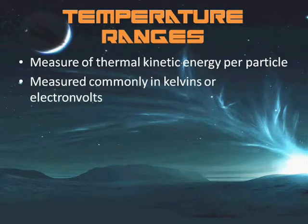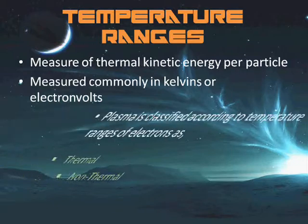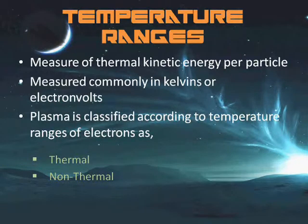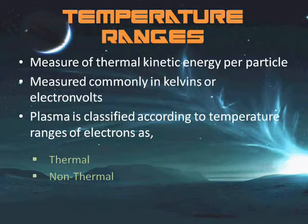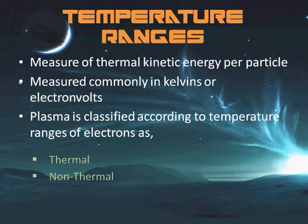Based on the relative temperatures of electrons, ions, and neutral particles, plasmas are classified as thermal or non-thermal. Thermal plasmas have electrons and heavy particles at the same temperature, in thermal equilibrium with each other. Non-thermal plasmas, on the other hand, have ions and neutrals at much lower temperature — normally room temperature — whereas the electrons are at much higher temperature.